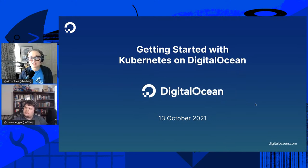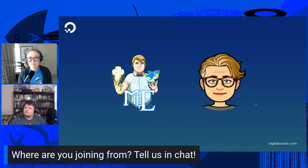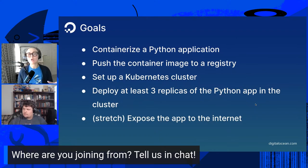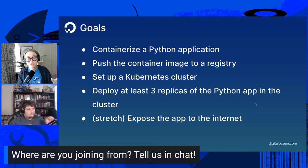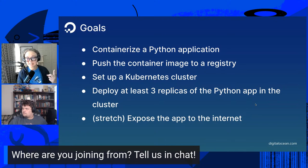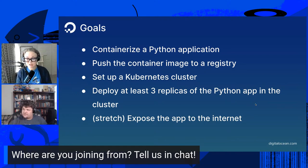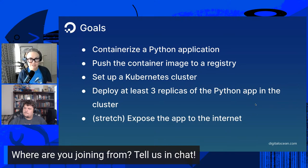This is Getting Started with Kubernetes on DigitalOcean. Mason and I are going to be working together — I'm the Kubernetes expert and Mason is a Python expert who knows a lot about Docker. If you are new to Kubernetes, here are our goals: first, containerize a simple Python application; second, push that image to a container registry; third, set up a Kubernetes cluster; fourth, deploy at least three replicas; and fifth, expose that application to the internet.